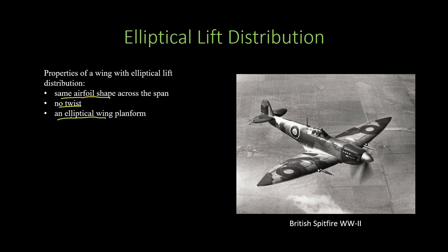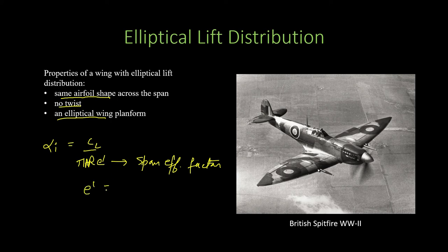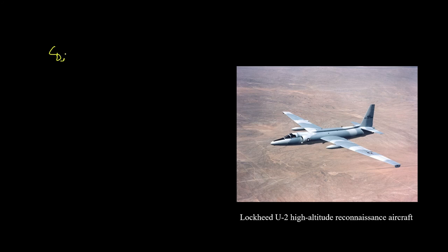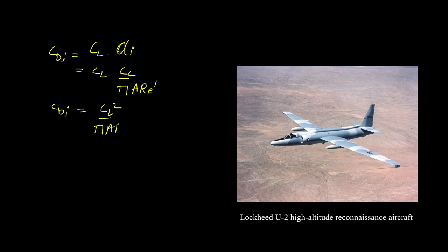For general wings the formula is modified as alpha_i = C_L / (π · AR · e'), where e' is the span efficiency factor. For an elliptical wing, e' equals one; for other wings e' is less than one. For general subsonic aircraft, e' varies between 0.85 and 0.95. Using this, C_Di can be written as C_L · alpha_i = C_L² / (π · AR · e').